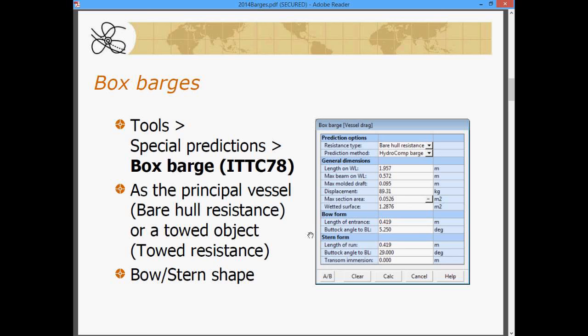We have two additional groups on a bow form and a stern form. We'll talk about this in detail in just a minute. But we have a length of entrance, a buttock angle to baseline, a length of run, buttock angle to baseline, and a transom immersion. And when we are ready to run a calculation, we can hit our calculate button.